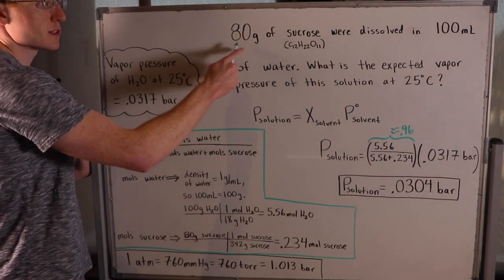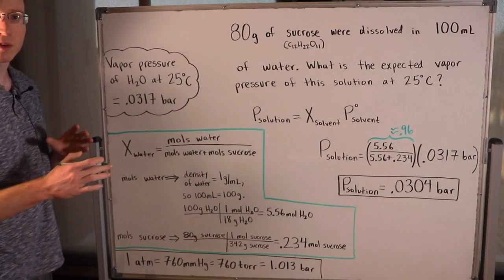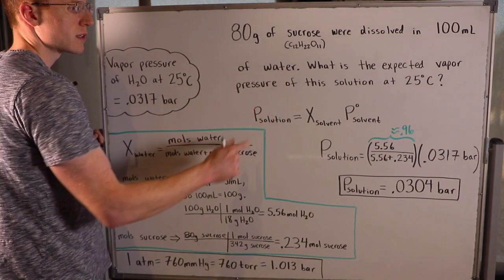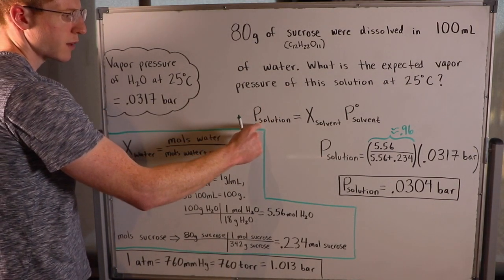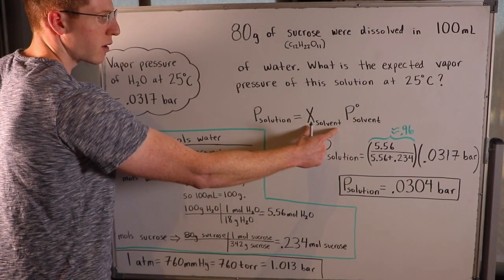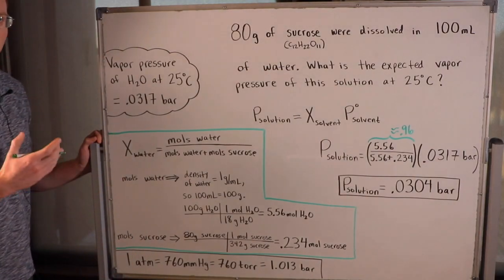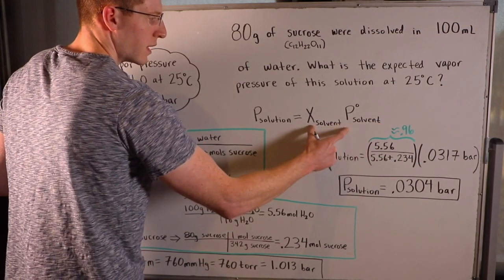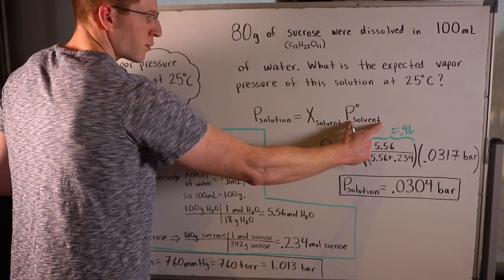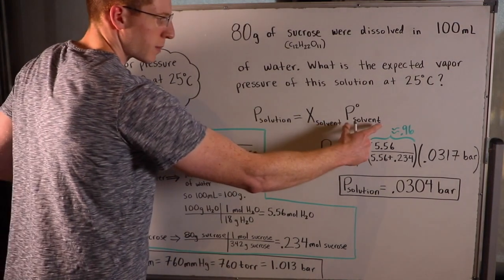Let's do an example problem. 80 grams of sucrose were dissolved in 100 milliliters of water. What is the expected vapor pressure of the solution at 25 degrees Celsius? This is clearly a Raoult's Law problem because we're dissolving a solute into a solvent — water — and we're asked about vapor pressure. We'll use Raoult's Law: P_solution equals X_solvent times P_solvent. The vapor pressure of pure water at 25°C can be looked up and is 0.0317 bar.